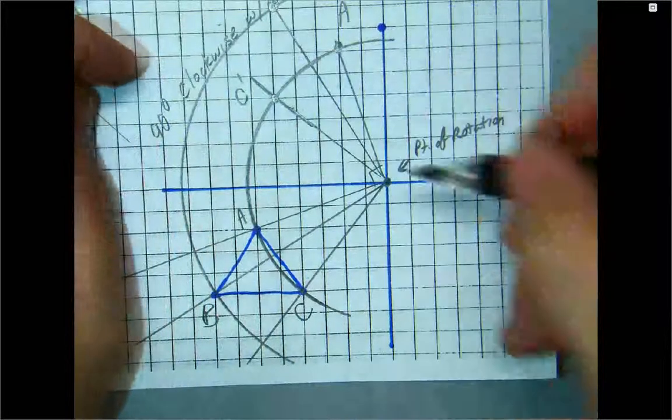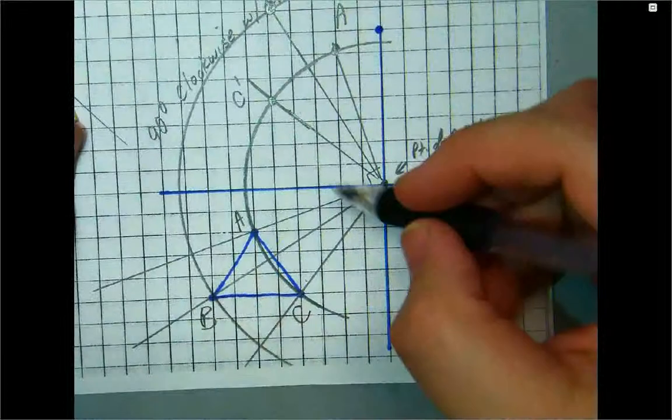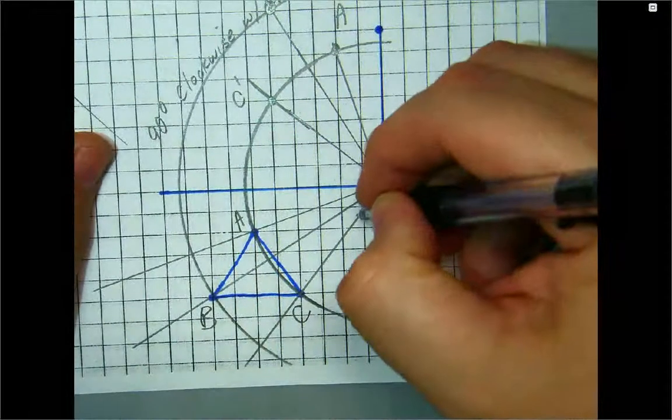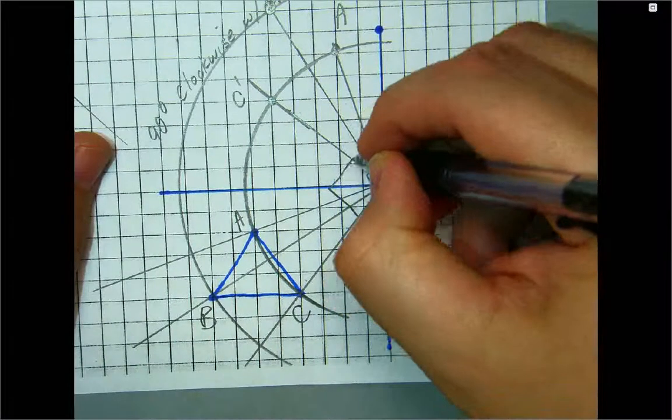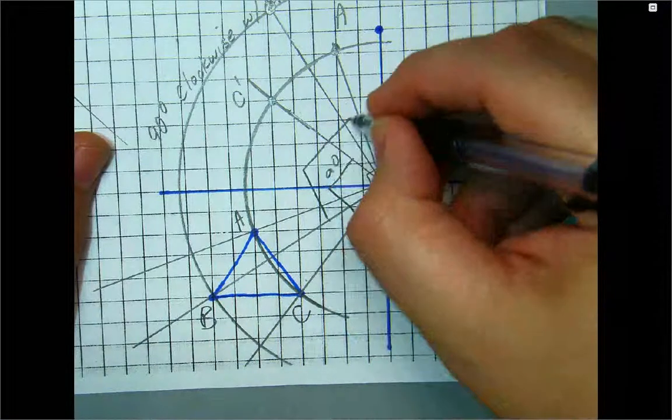So you draw your arcs. You draw lines through here. And then, that's 90 degrees. That's 90 degrees. And that's 90 degrees.